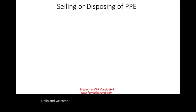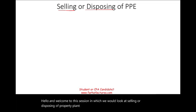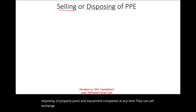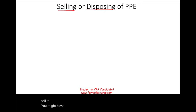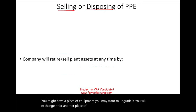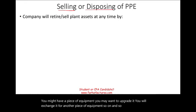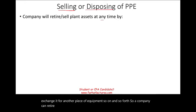Hello and welcome to this session on selling or disposing of property, plant, and equipment. Companies at any time can sell, exchange, or retire any of their assets. For example, you might have a piece of equipment you want to sell because you no longer need it, or you may want to upgrade and exchange it for another piece of equipment. A company can retire or sell plant assets at any time.